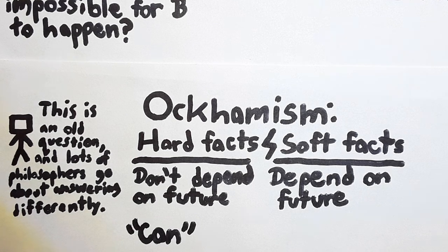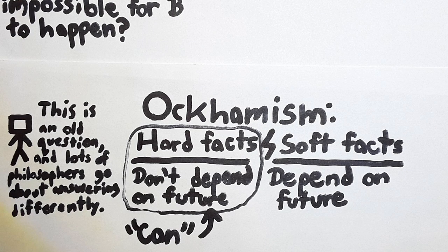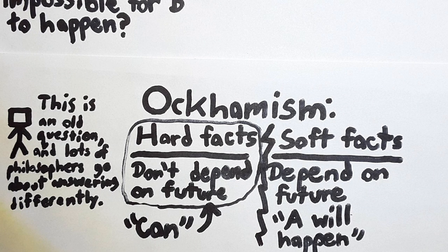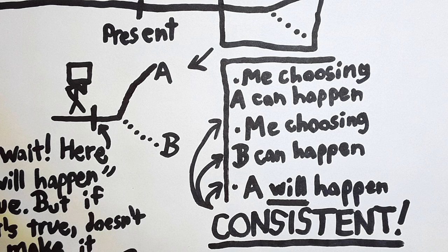Now, if you accept the Ockhamist's distinction, what can happen is a question that needs to be decided by hard facts. Soft facts like A will happen don't come into the equation. So, these facts can all be held simultaneously.